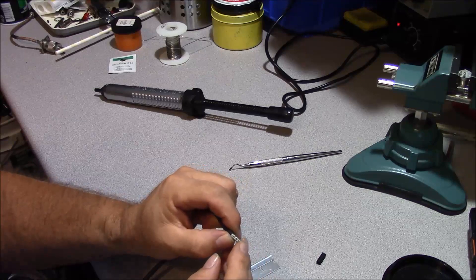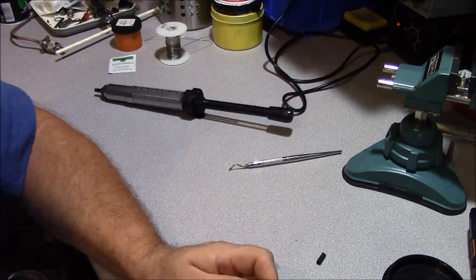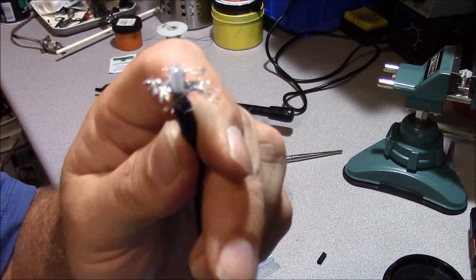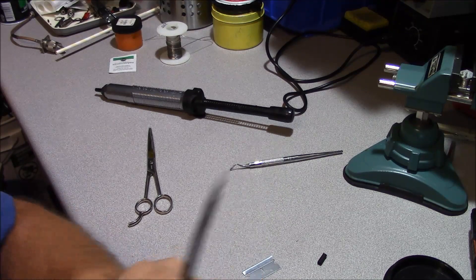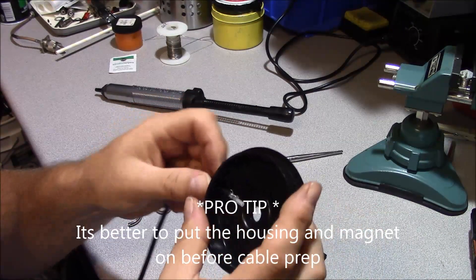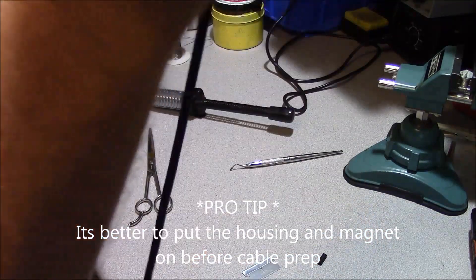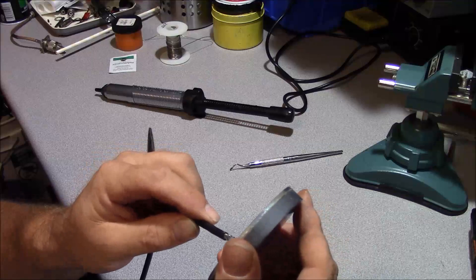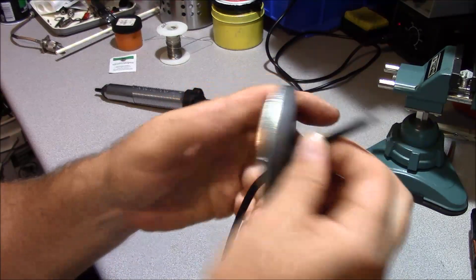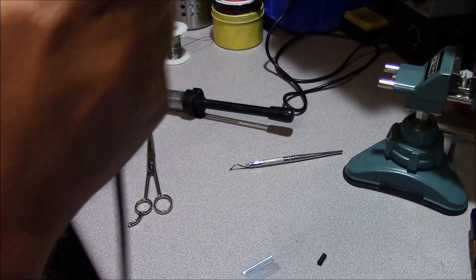And then we want to go about half that distance back. We want to take a scissor and we want to trim our shield, give it a little haircut. Now that we've given ourselves a little haircut, we'll go ahead and feed our cable through our plastic and run that down. And then we're going to run it through our magnet from the bottom first and slide all that down out of the way.